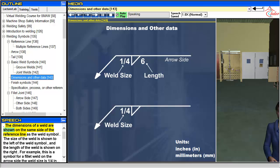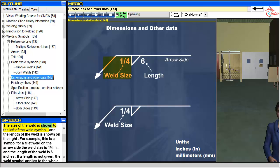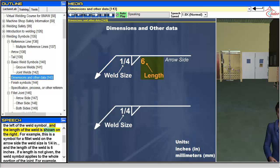The dimensions of a weld are shown on the same side of the reference line as the weld symbol. The size of the weld is shown to the left of the weld symbol, and the length of the weld is shown on the right.